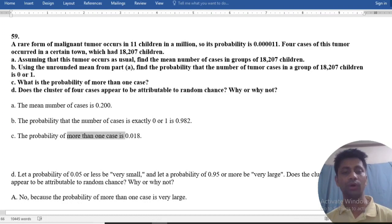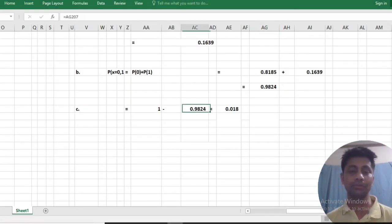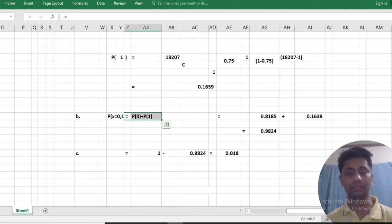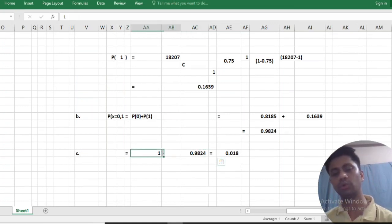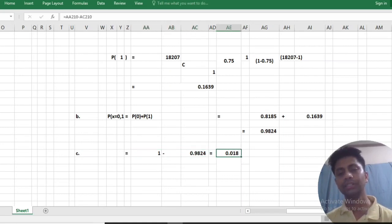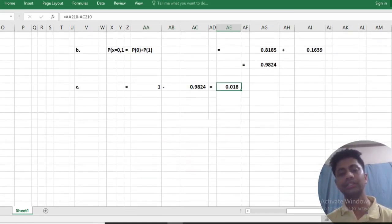More than one cases. That means 1 minus probability of 0 to 1. By subtracting, we get the result is 0.018.